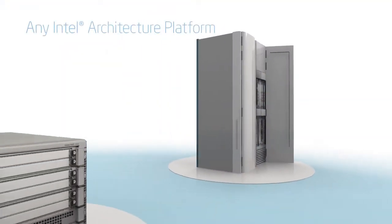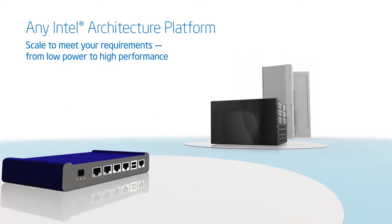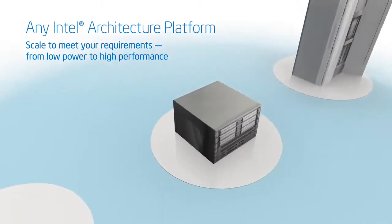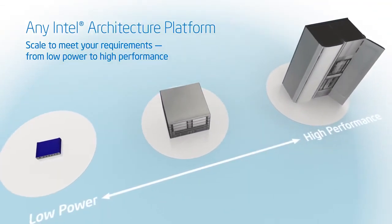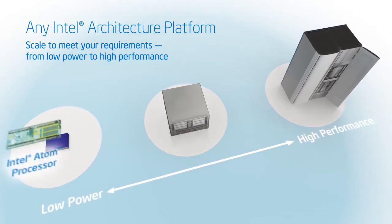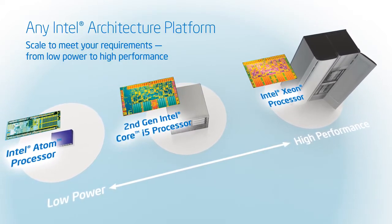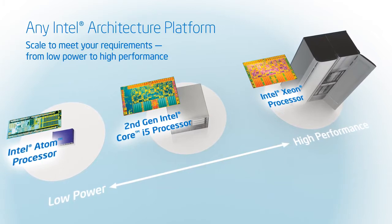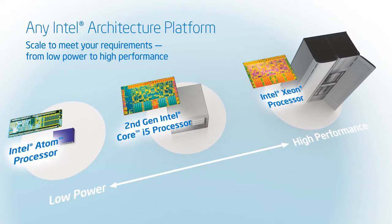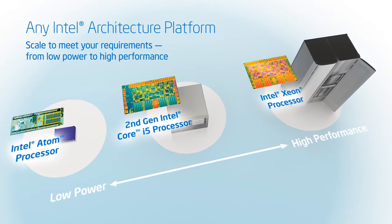The Intel Data Plane Development Kit is designed to work on any Intel architecture platform so you can scale to meet your performance requirements. That means you can deploy Intel Atom processors for low-power network appliances, or scale to the latest Intel Xeon processor platforms for throughput-intensive requirements.